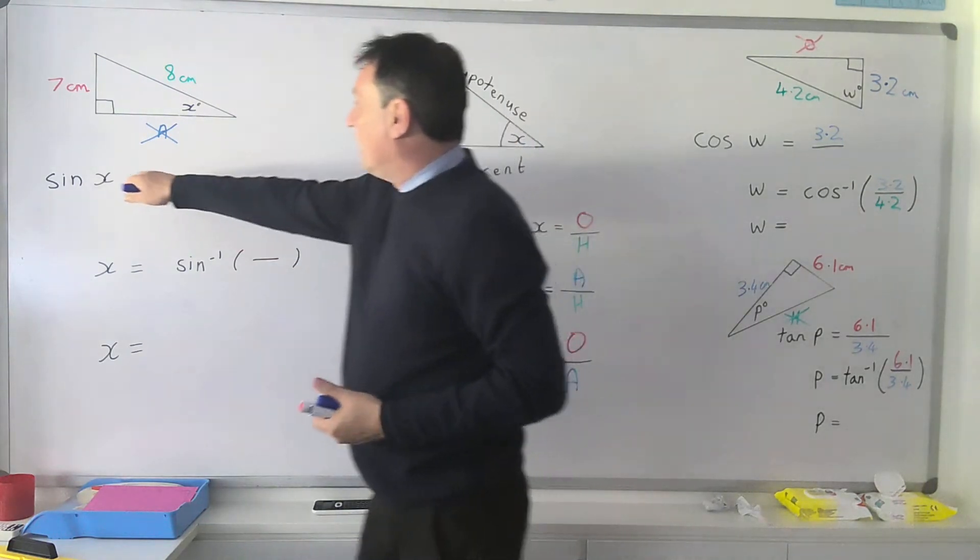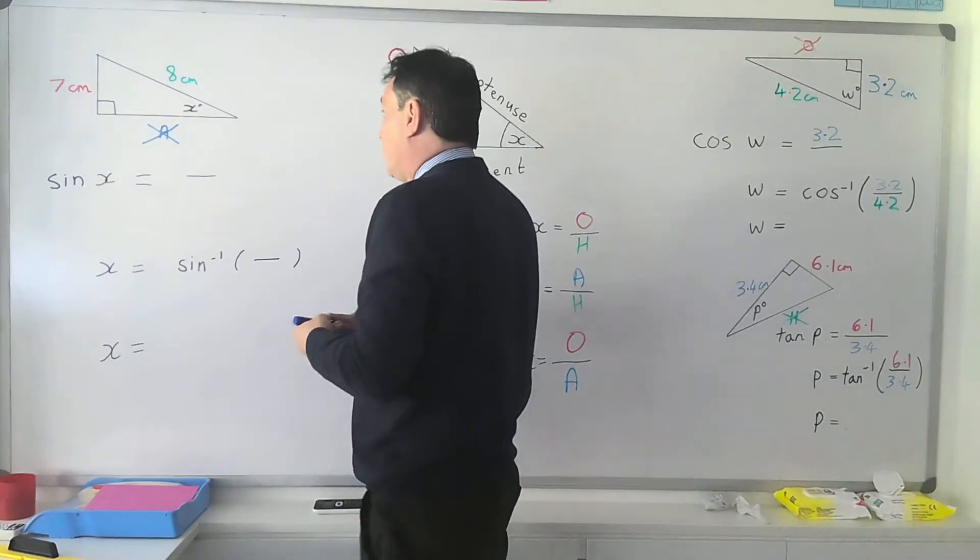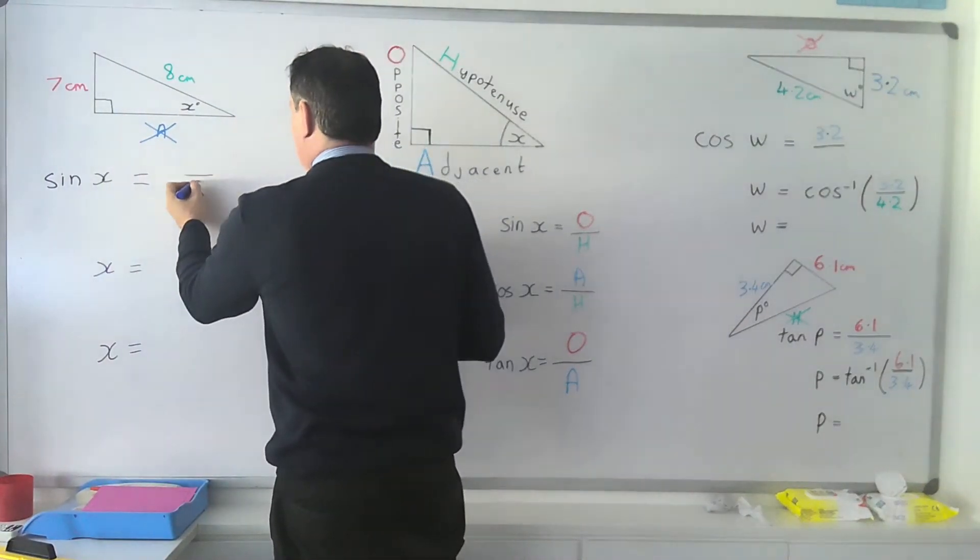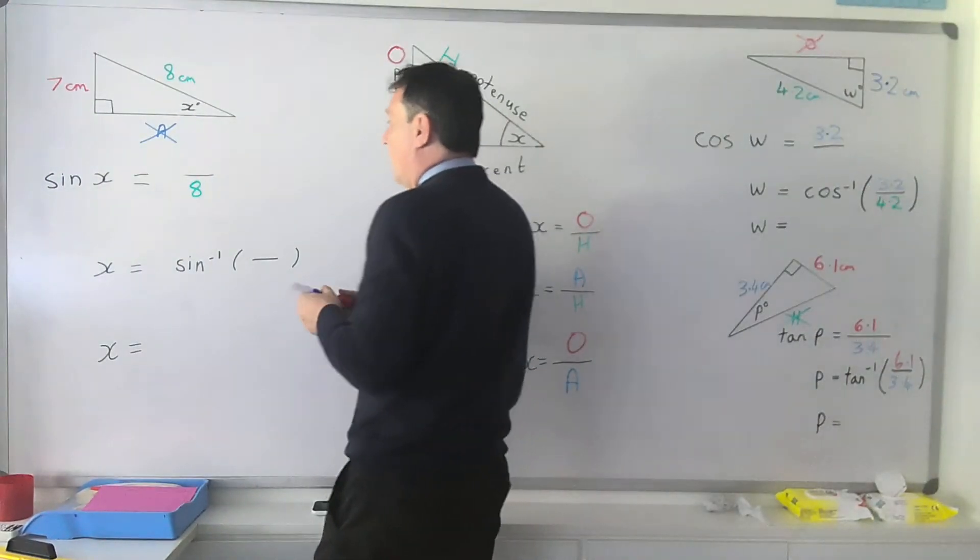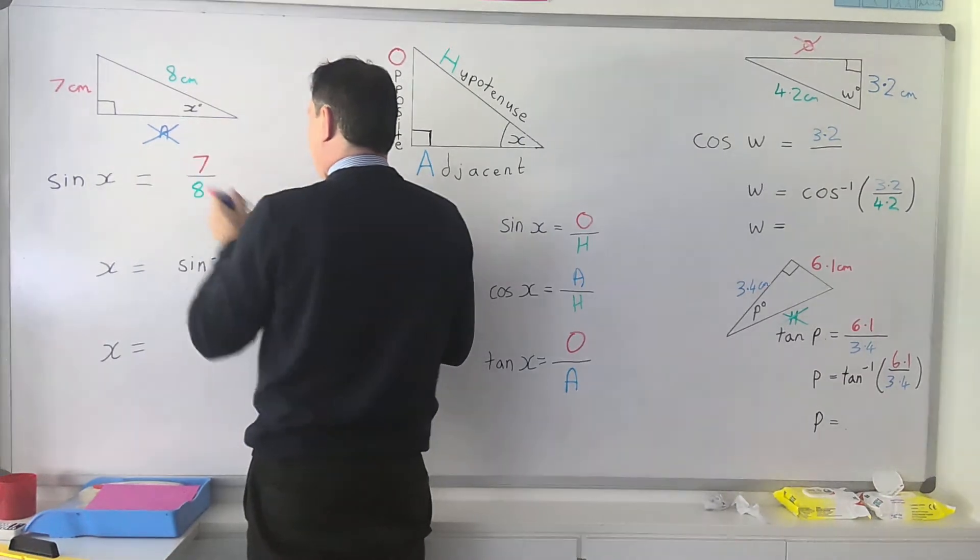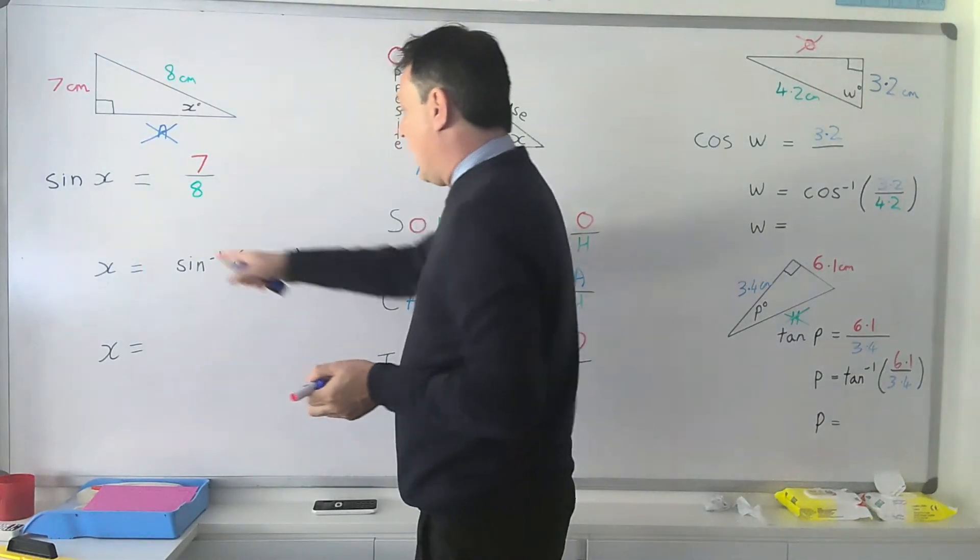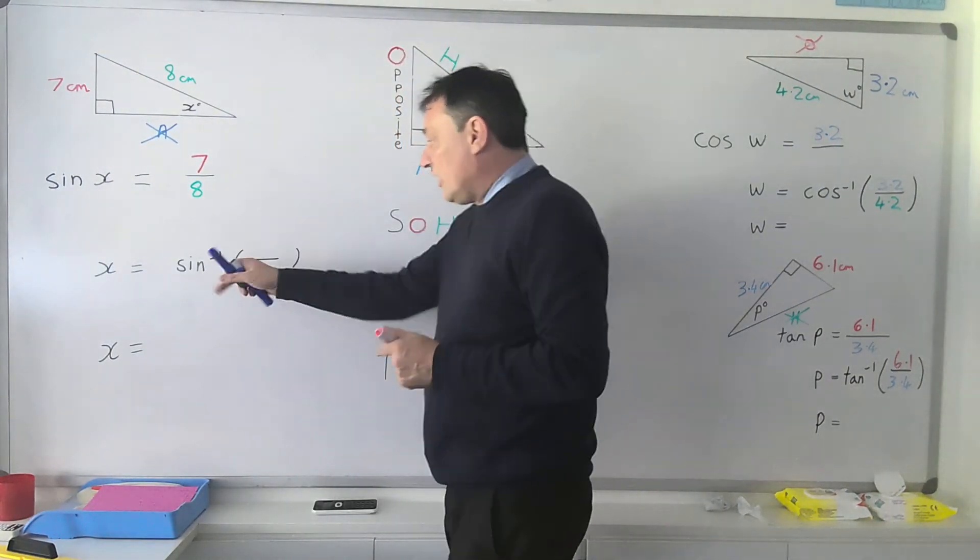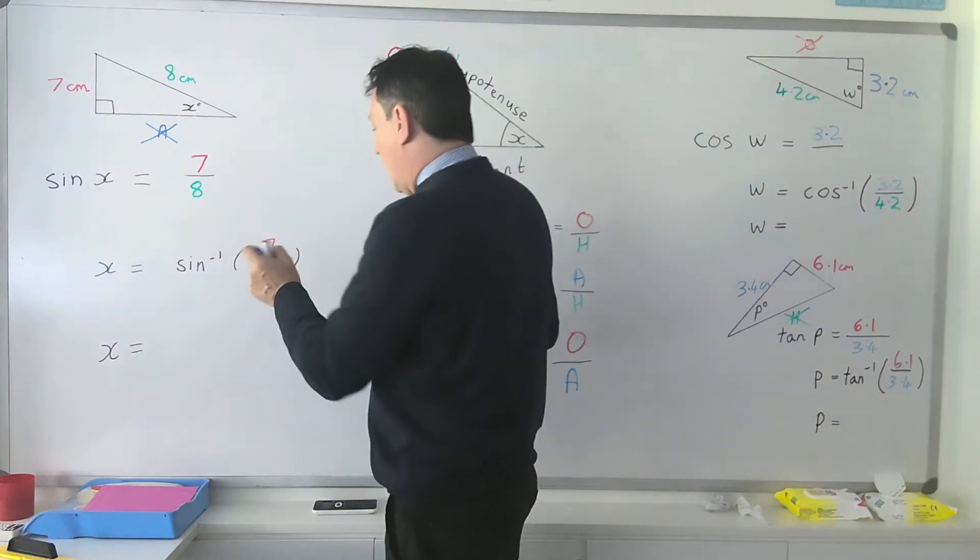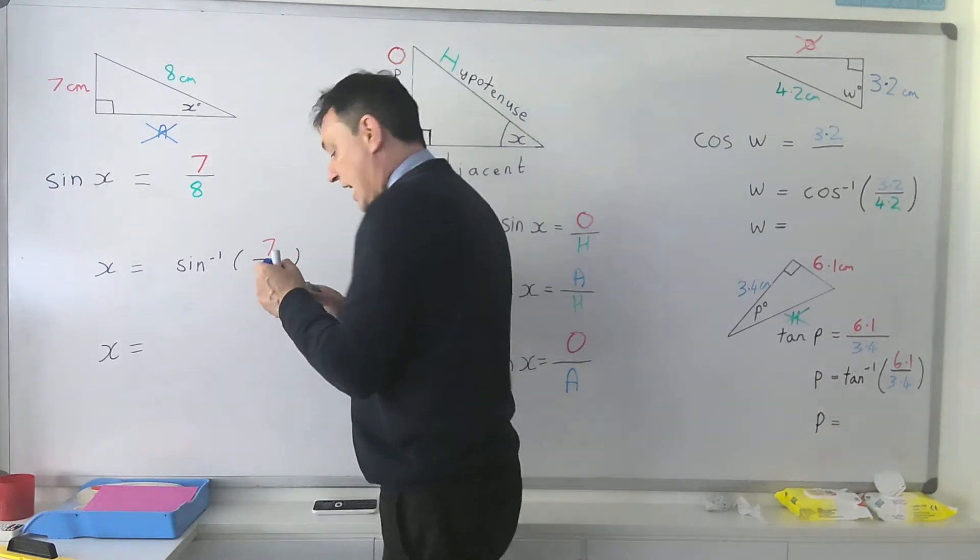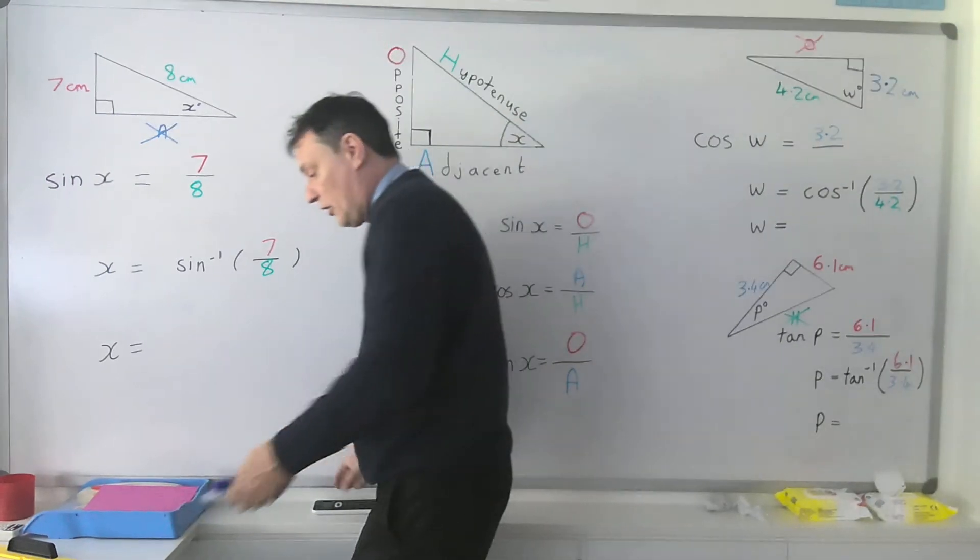So what we do, sine x is going to be substituting in to give us an 8 on the bottom there for our hypotenuse and a 7 on top. Now x is going to be sine to the minus 1, 7 over 8. Sine to the minus 1 is basically the inverse sine, it's the inverse function.